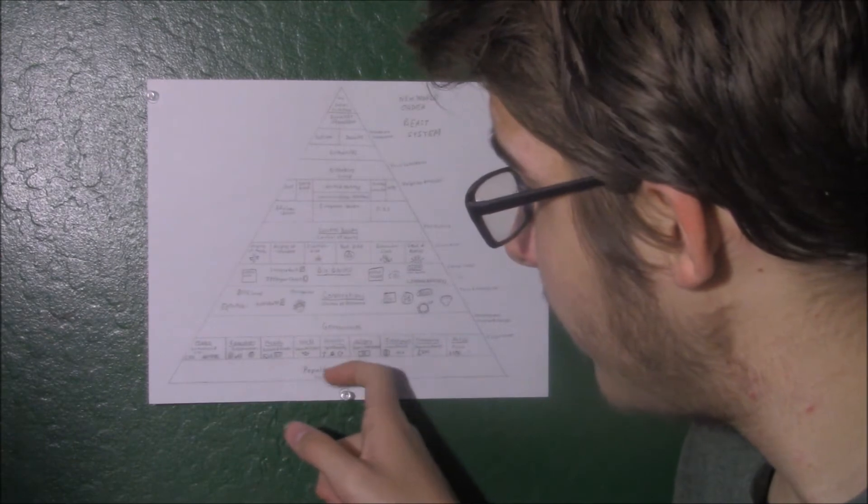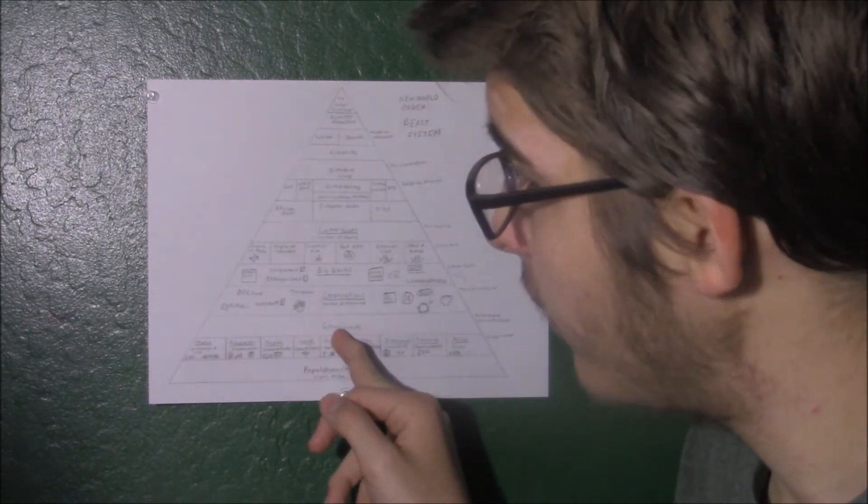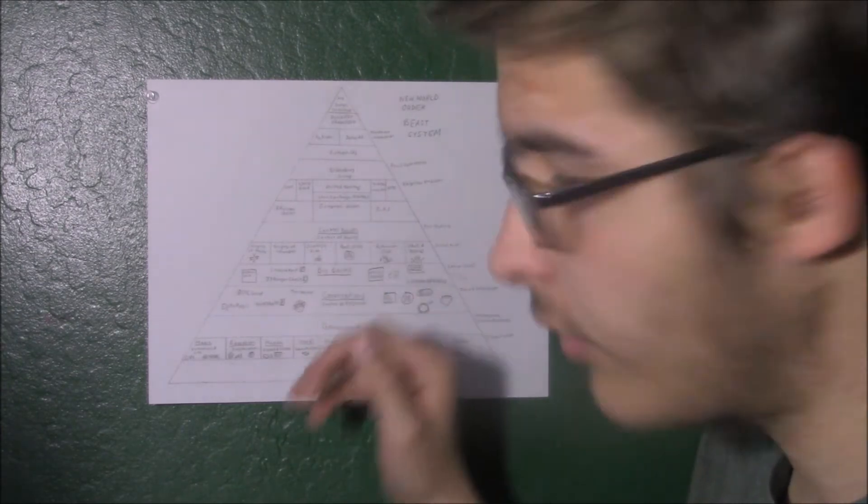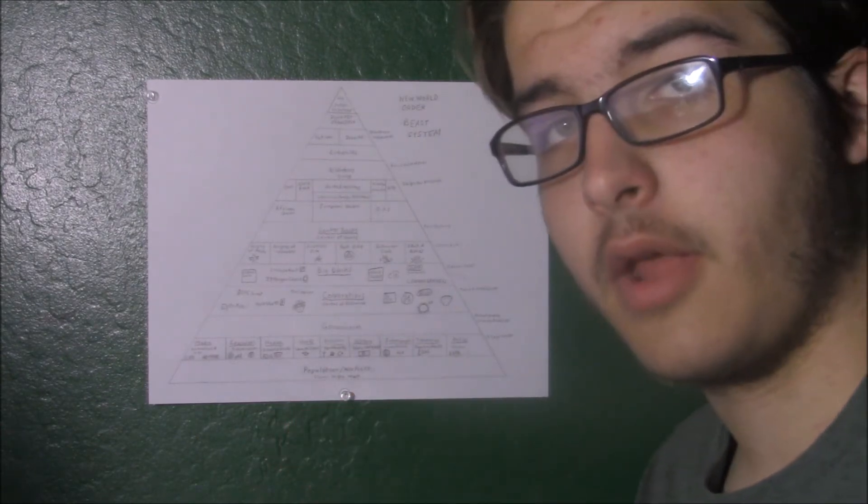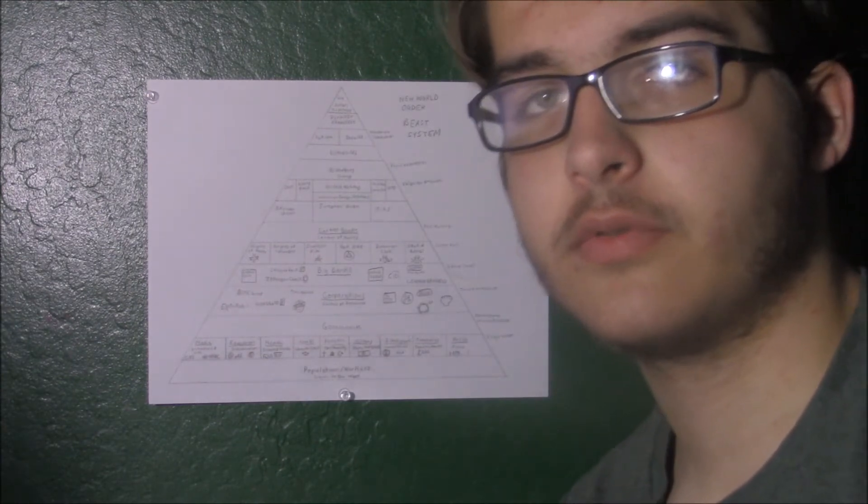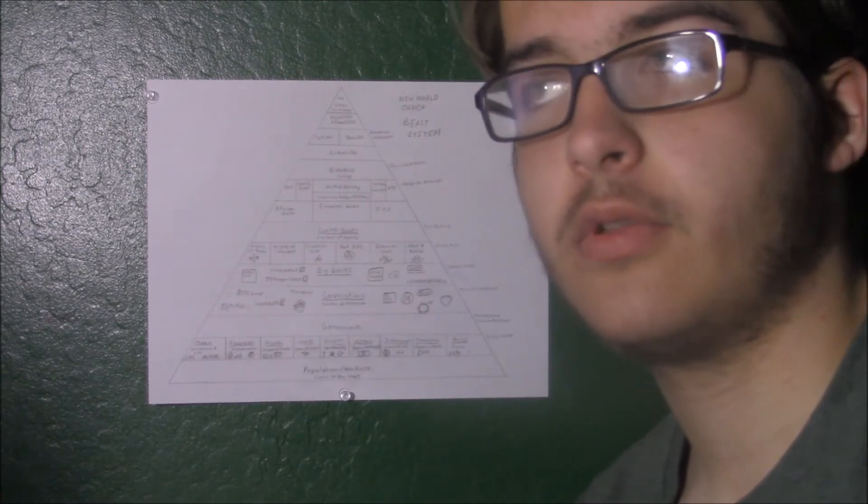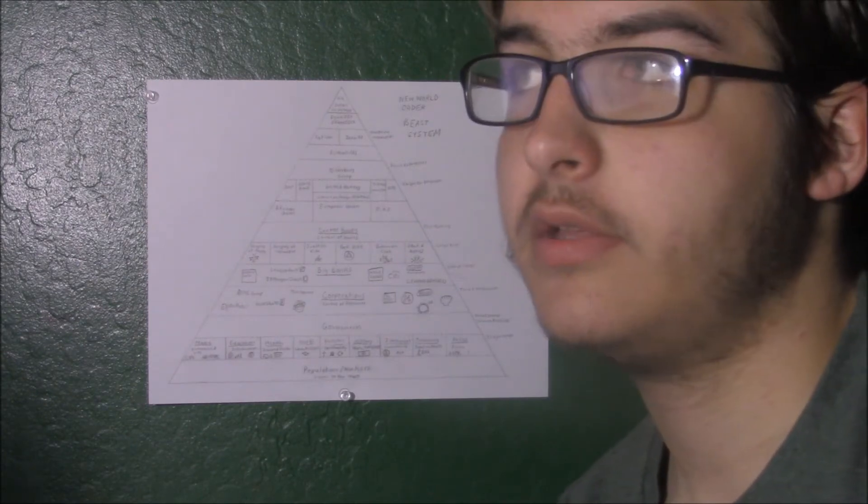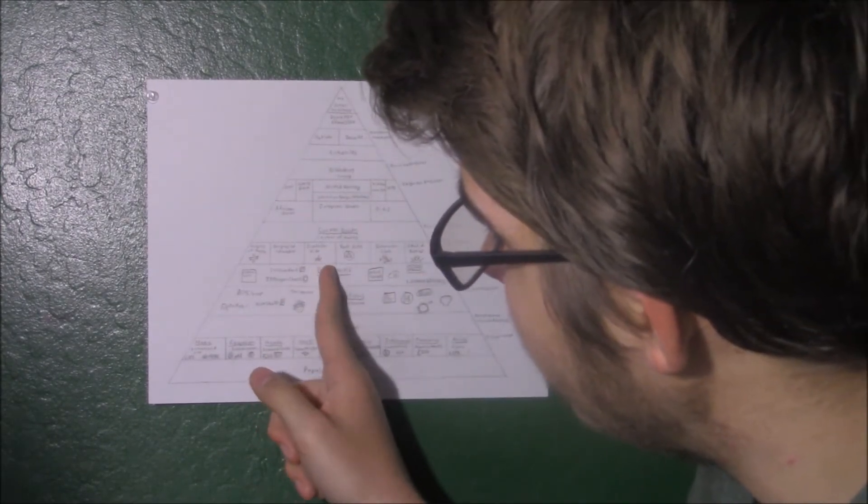Today I will skip governments and talk about corporations and how they control. Corporations are large businesses, and many have come under the control of the new world order. The primary goal of the corporations is control of the resources which can be used to enslave mankind.